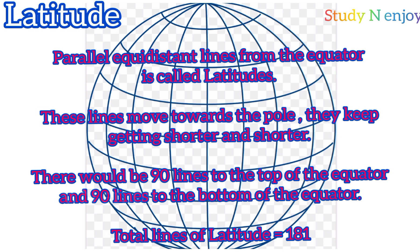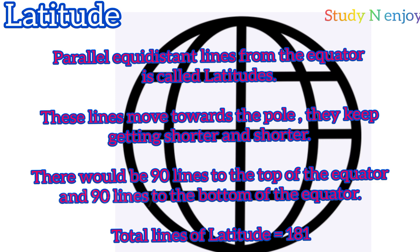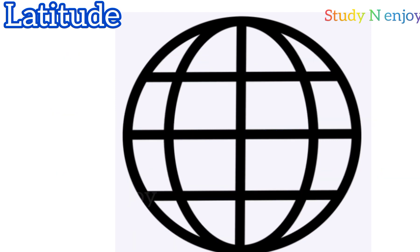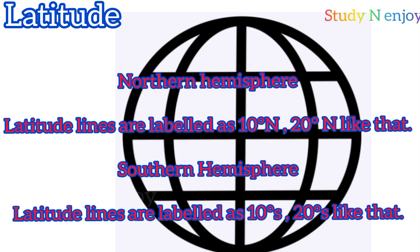So, how many latitudes are drawn on the globe? 181 latitudes. In the northern hemisphere, the latitudes are labeled as 10 degrees N, 20 degrees N, and so on. While in the southern hemisphere, they are labeled as 10 degrees S, 20 degrees S, and so on.